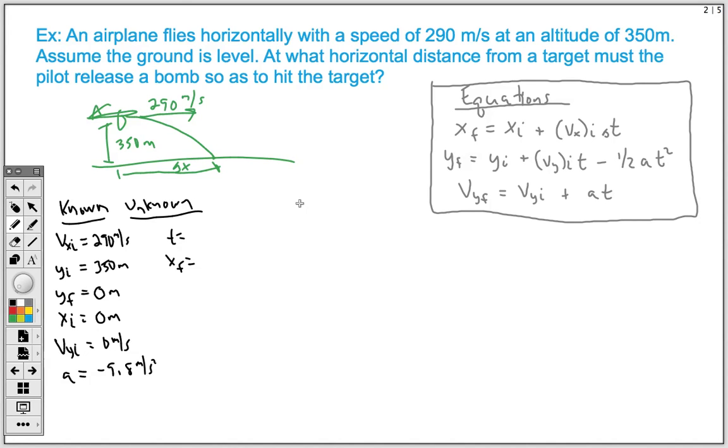So let's go ahead and do that. Our YF, that's going to be zero meters. We know our YI is 350 meters. We're going to add that to our initial vertical velocity, which was zero meters per second times time, and we're going to subtract our one-half, 9.8 meters per second squared times T squared.